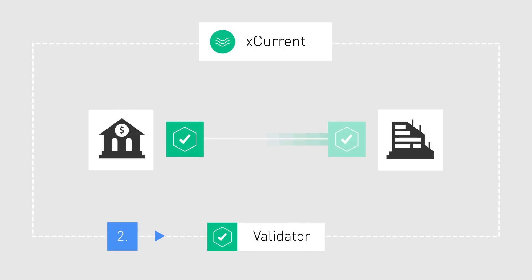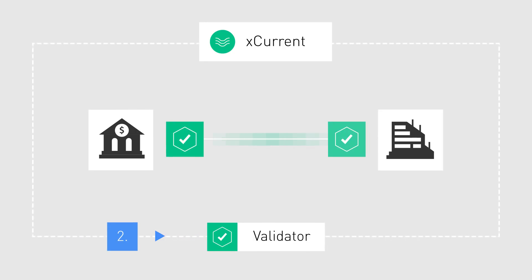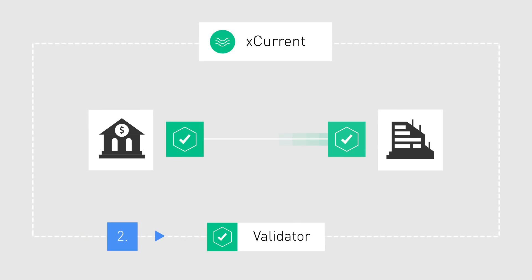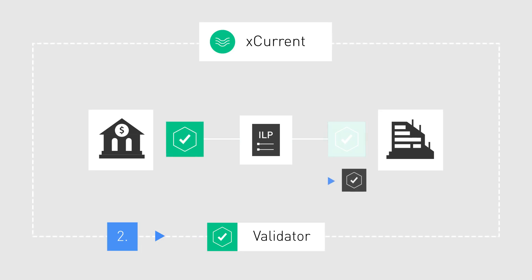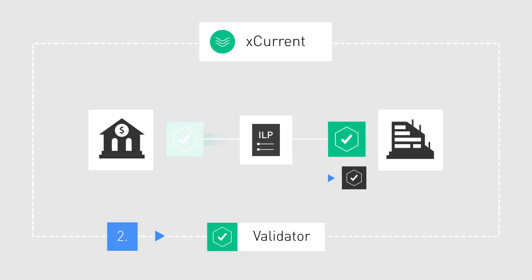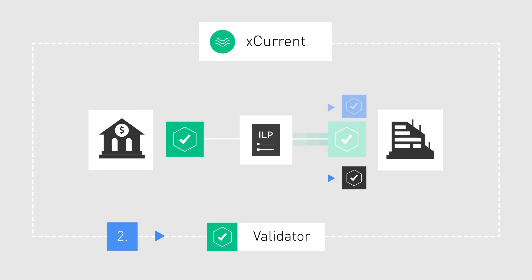Validator is used to cryptographically confirm the success or failure of a transaction, and also to coordinate moving of funds across the Interledger. Financial institutions can run their own validator, or can rely on a third-party validator.